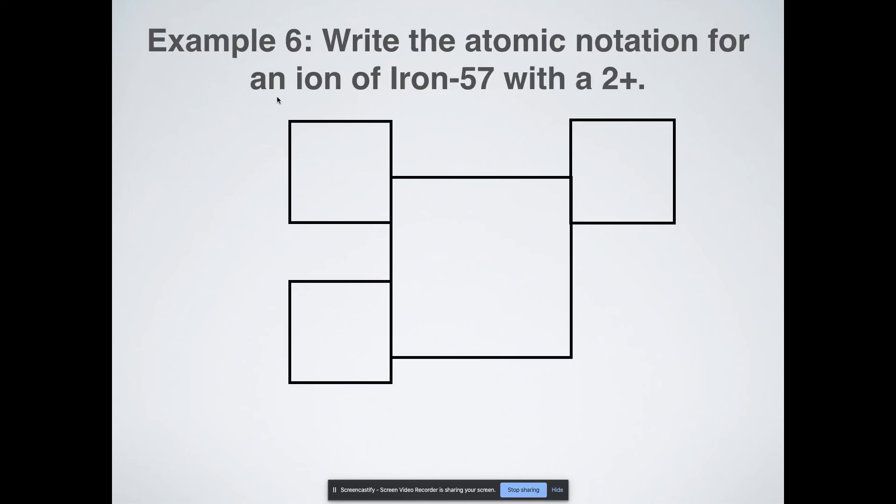So write the atomic notation for an ion of iron 57 with a 2 plus charge to it. All right. Let's go. So Fe is iron. We know that. 57, mass number. What number on the periodic table, atomic number, is iron? It's number 26.